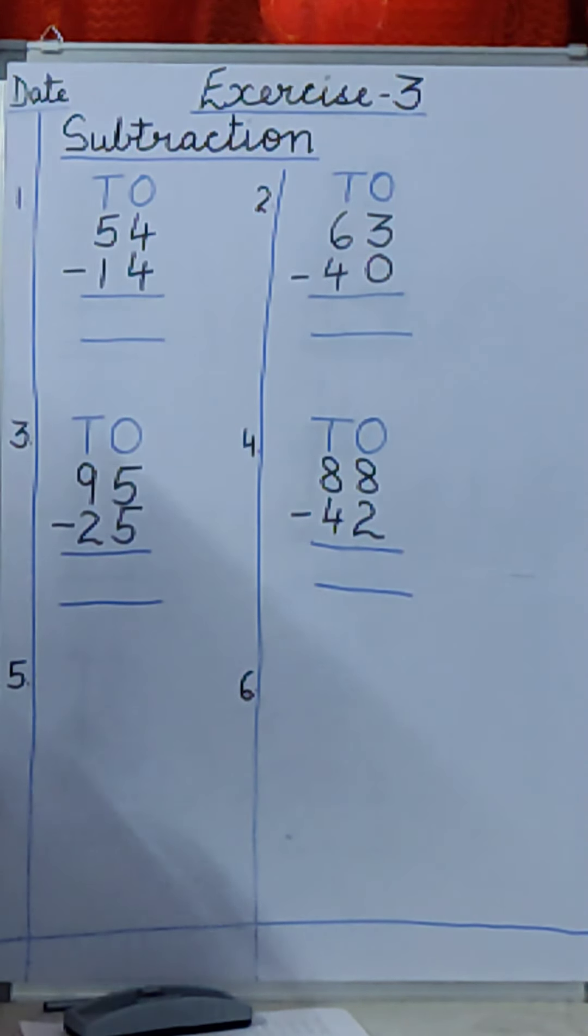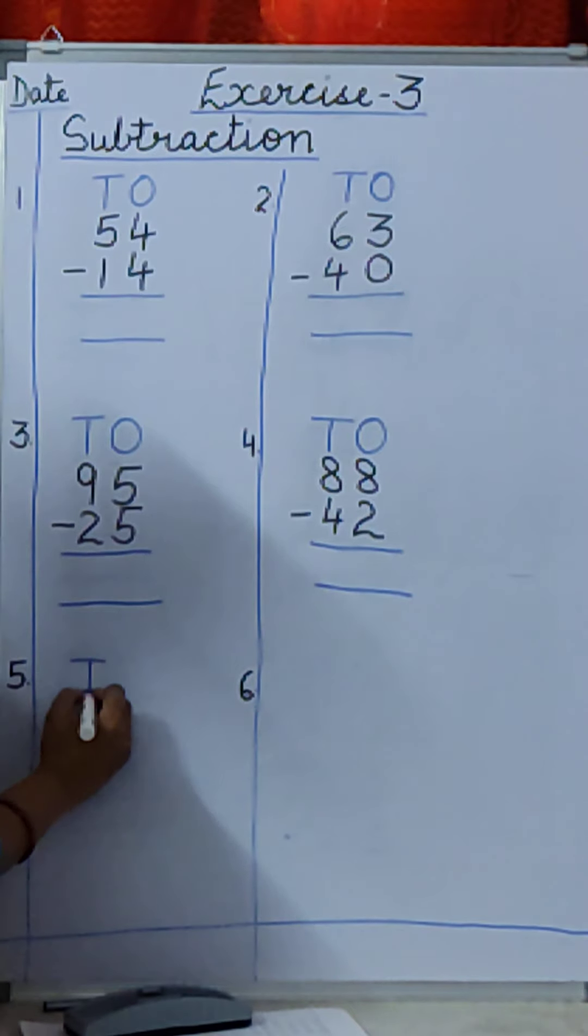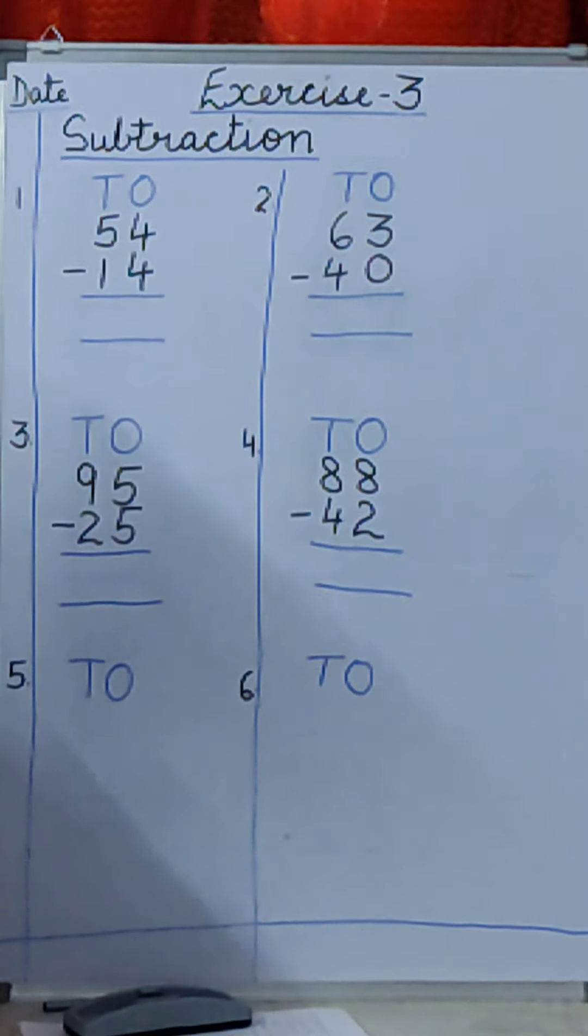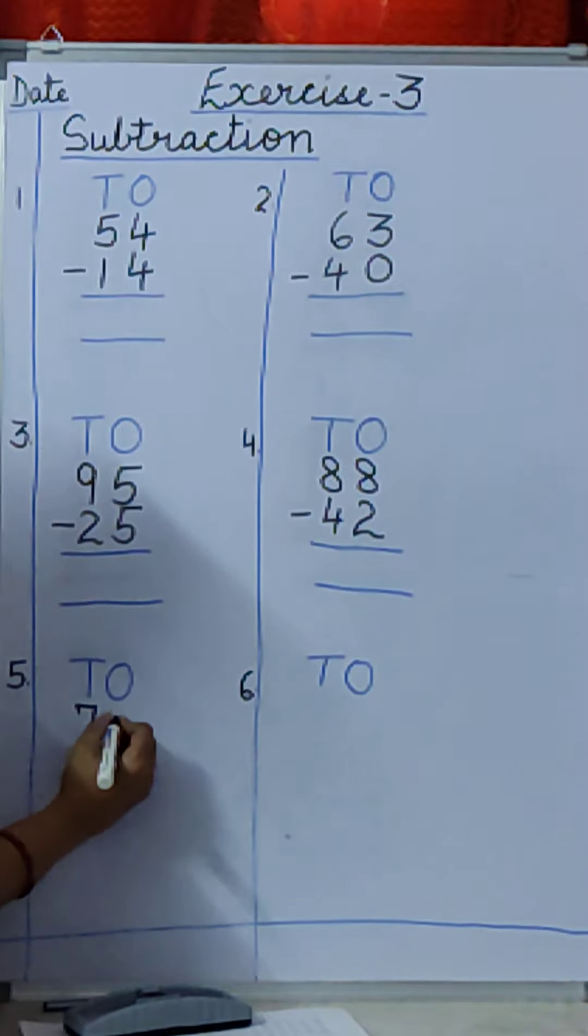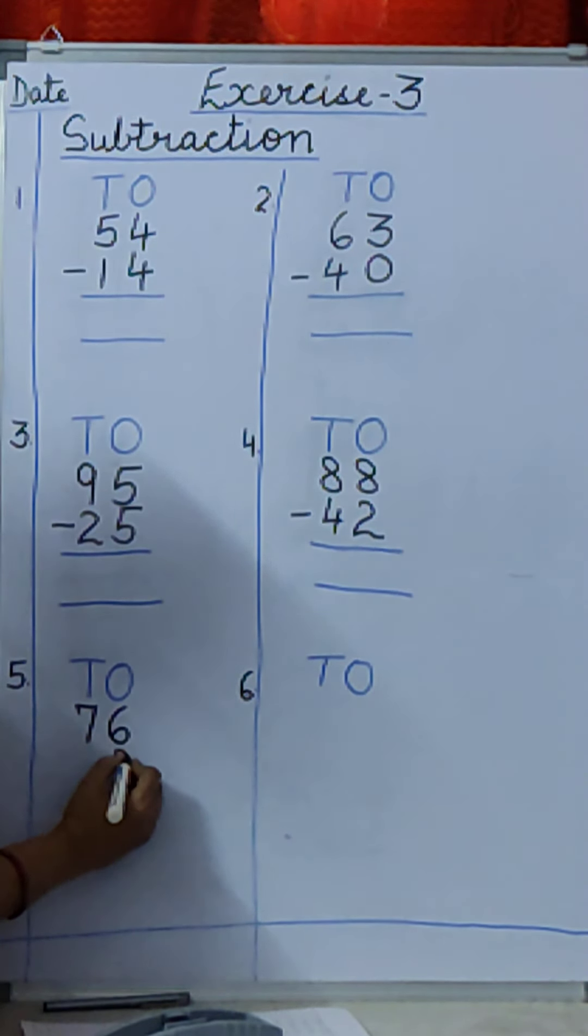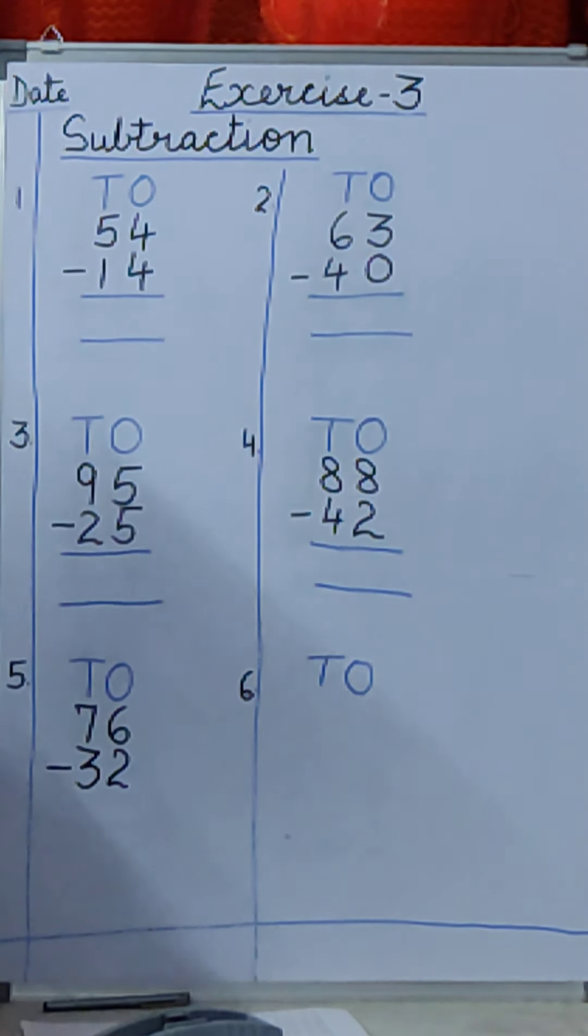Then again leave a box and write T.O. Now you will write. Then the fifth one is. You will write 76 minus 32. So first you will subtract 6 minus 2. Then you will subtract 7 minus 3.